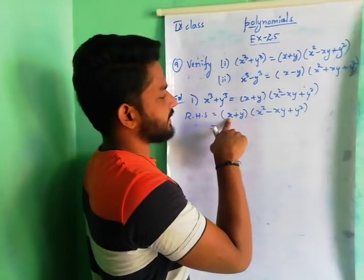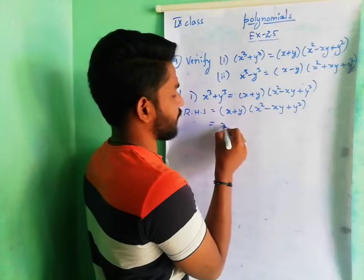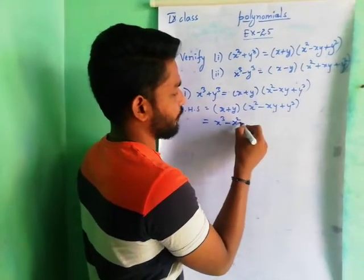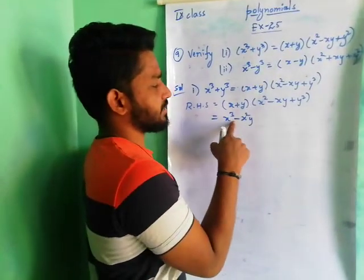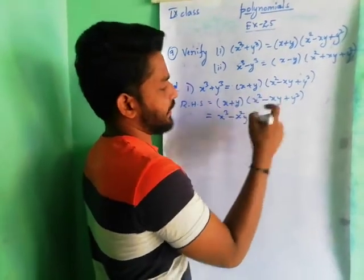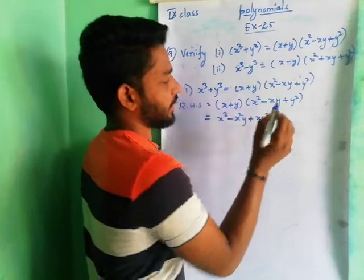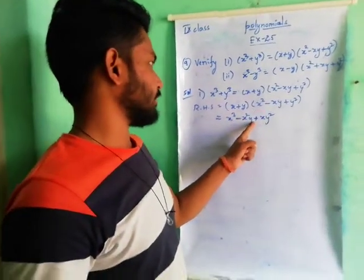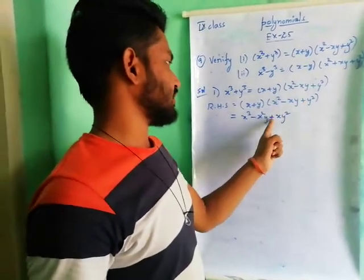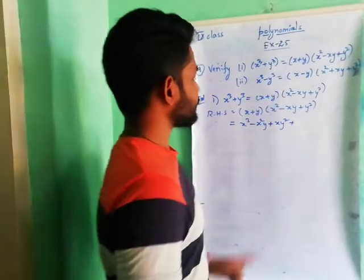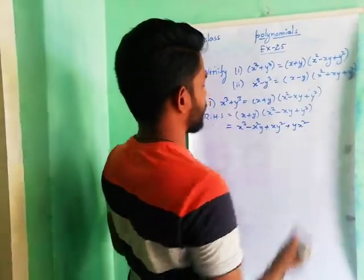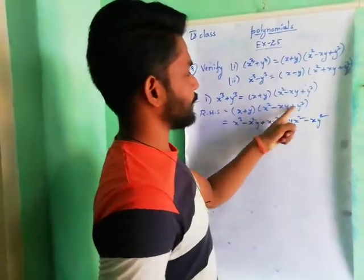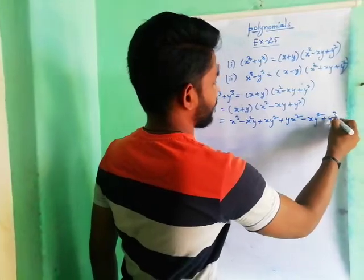I am multiplying (x + y) to the polynomial (x square minus xy plus y square). Taking the first term x and multiplying the whole term: x into x square is x cube; x into (−xy) is minus x square y; x into y square is plus xy square. Coming to y: y into x square is yx square; y into (−xy) — plus into minus is minus — gives minus xy square; y into y square is plus y cube.